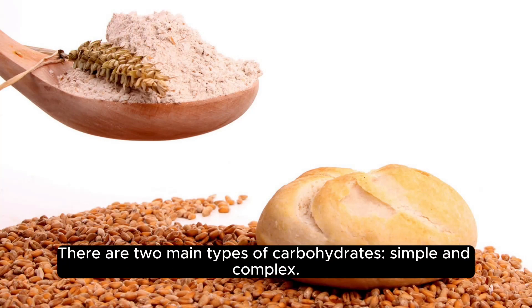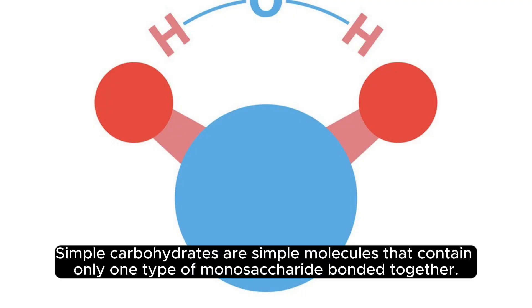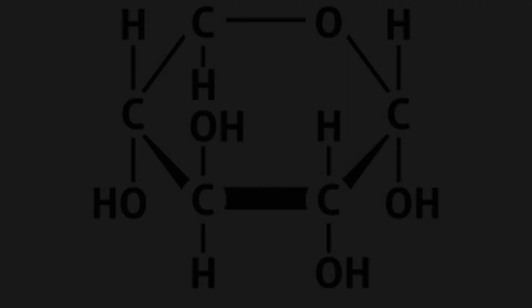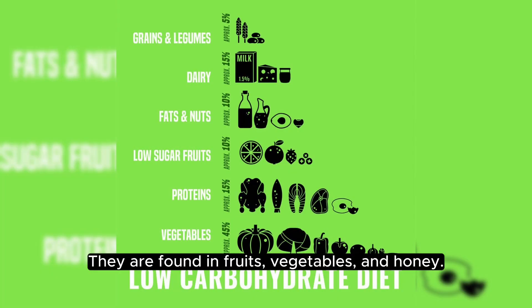There are two main types of carbohydrates: simple and complex. Simple carbohydrates are simple molecules that contain only one type of monosaccharide bonded together. Examples of simple carbohydrates include glucose, fructose, and galactose. They are found in fruits, vegetables, and honey.